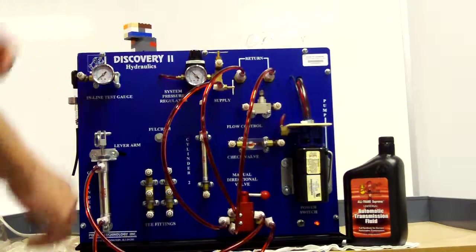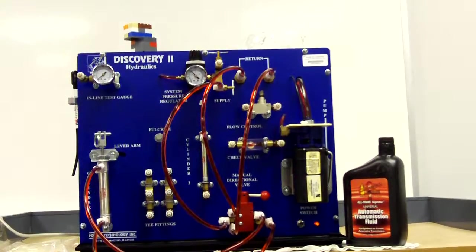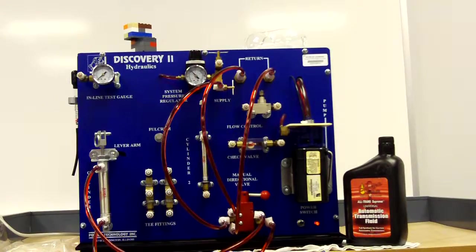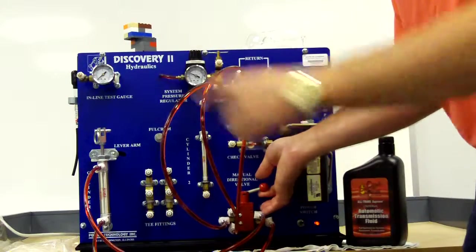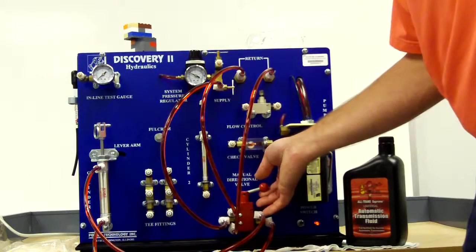And so when we hit the valve, which you can't quite see, the directional control valve up and the valve should go up. And you can see it slowly making its way up.